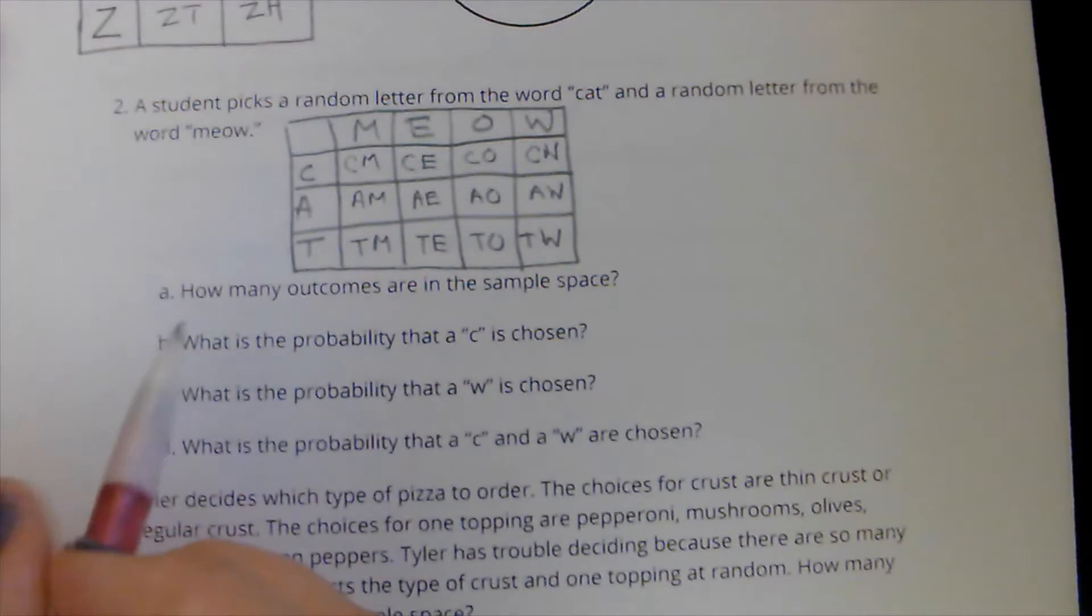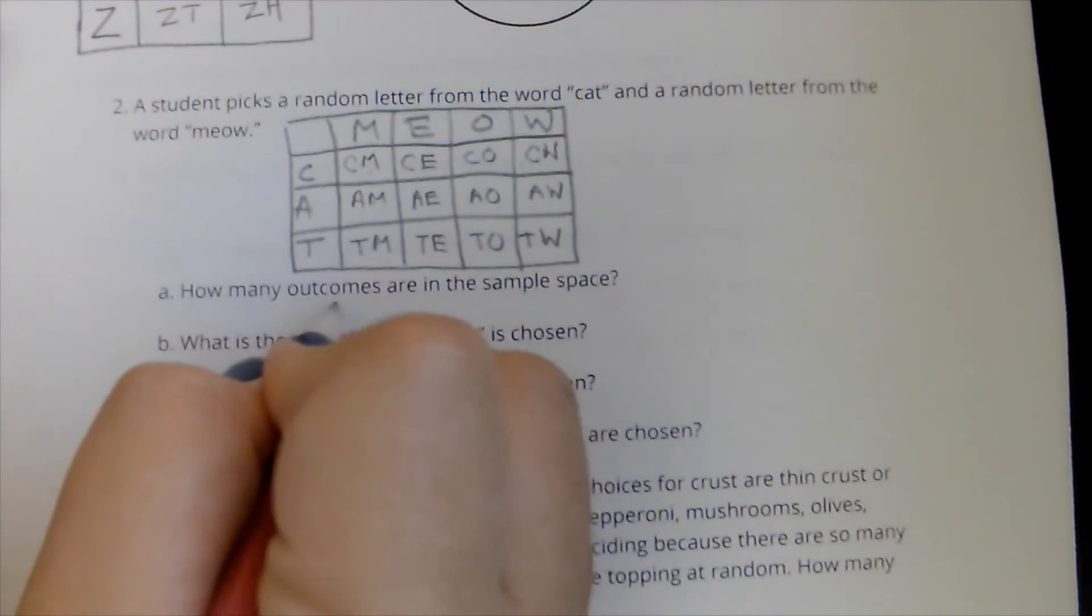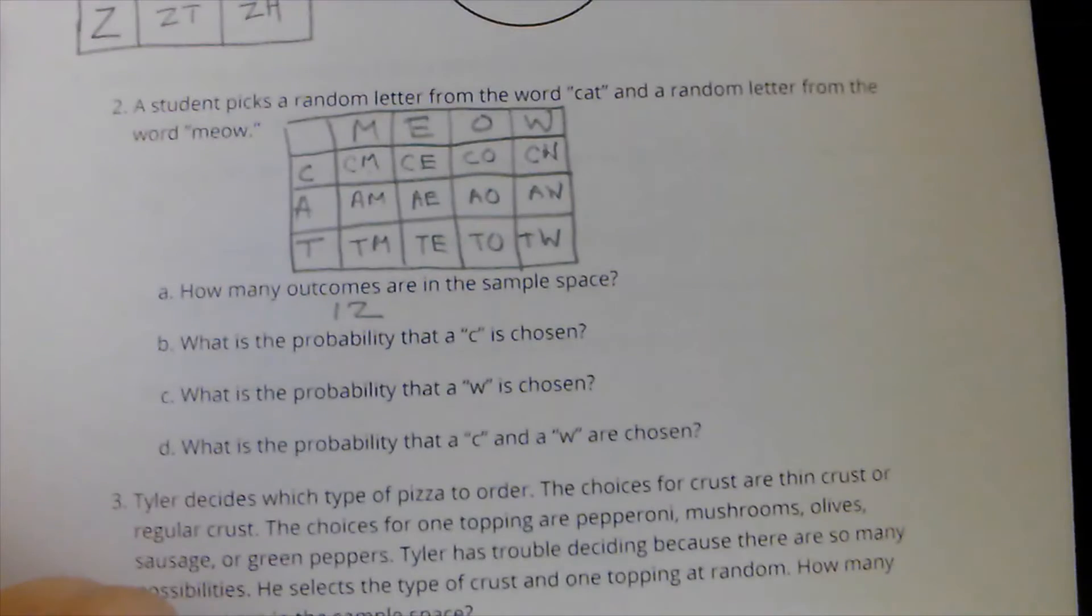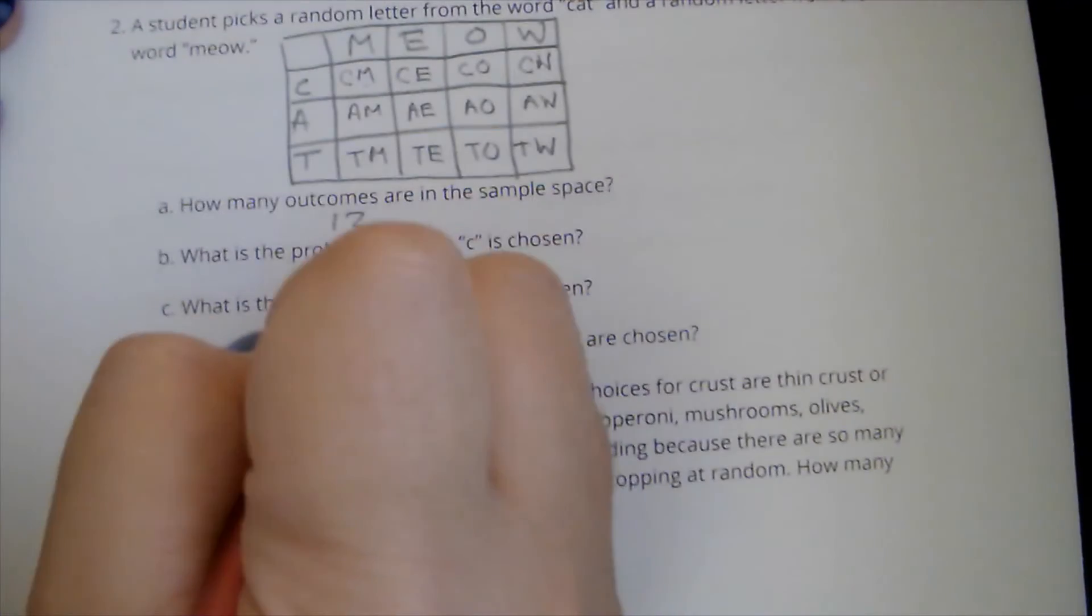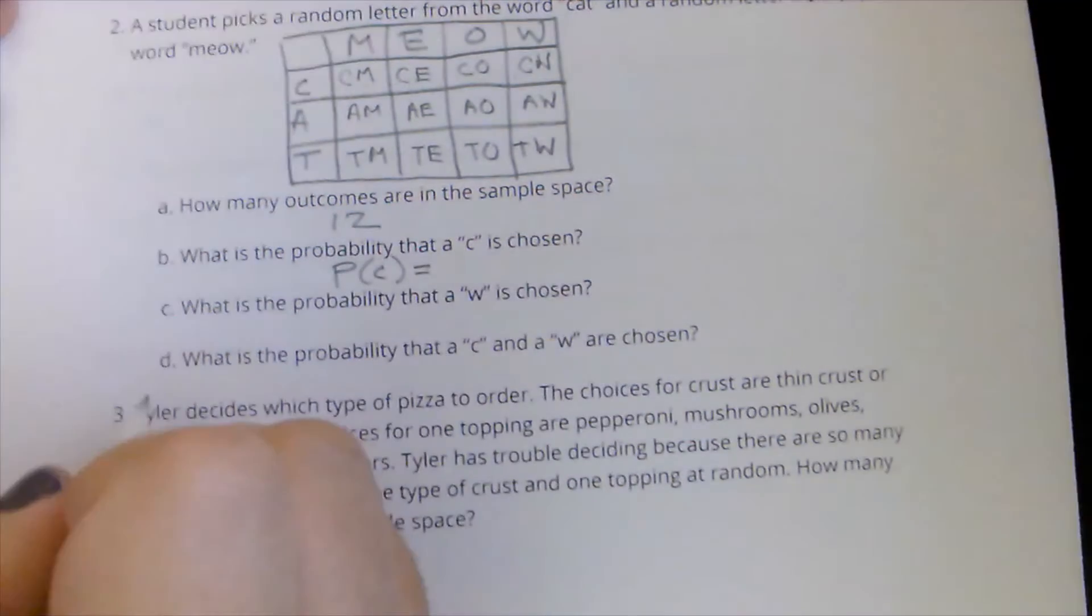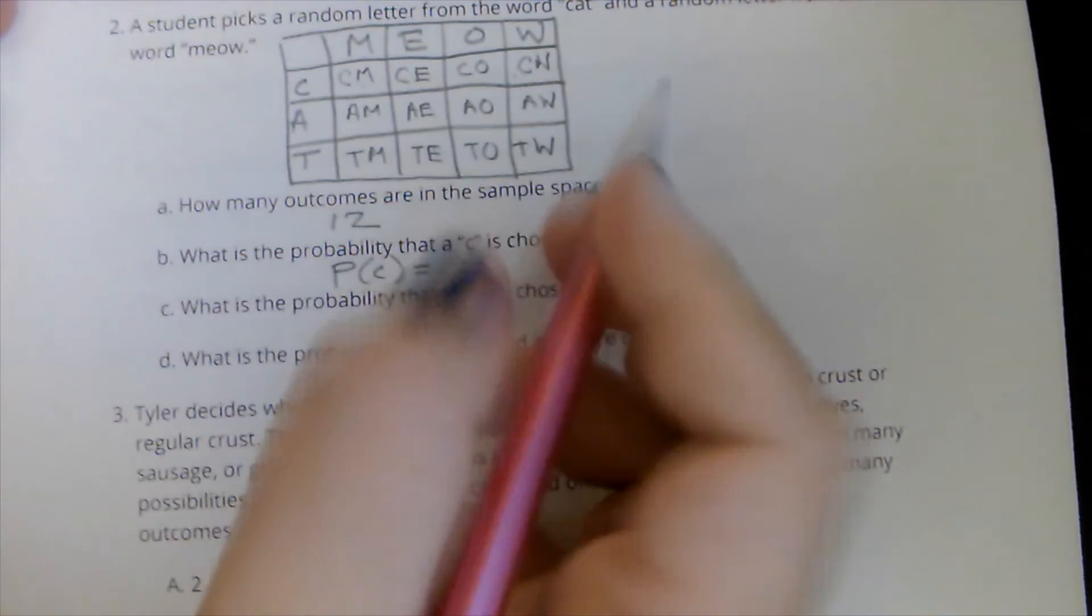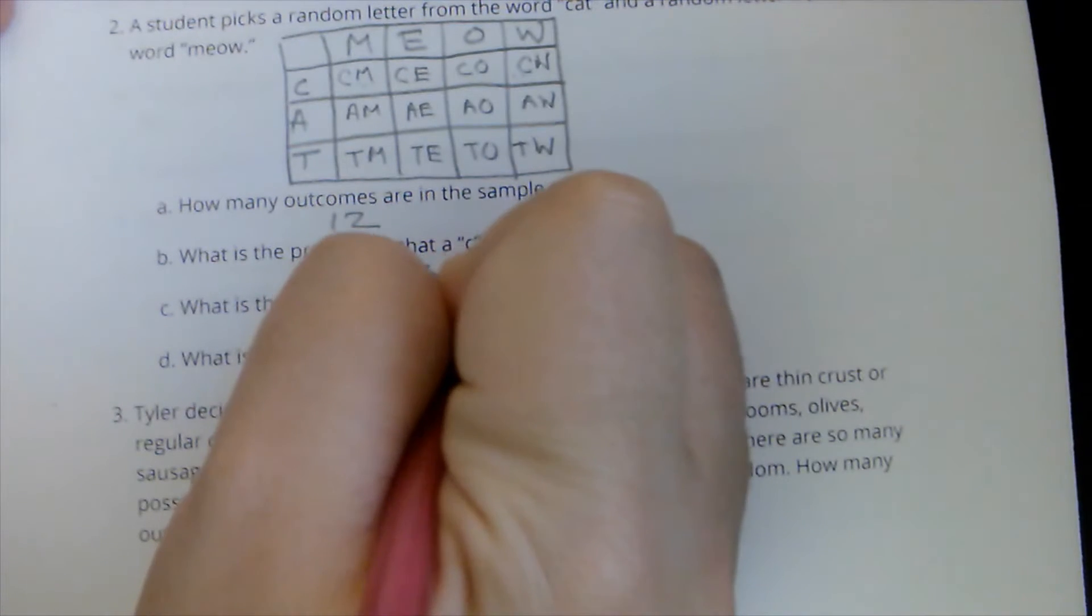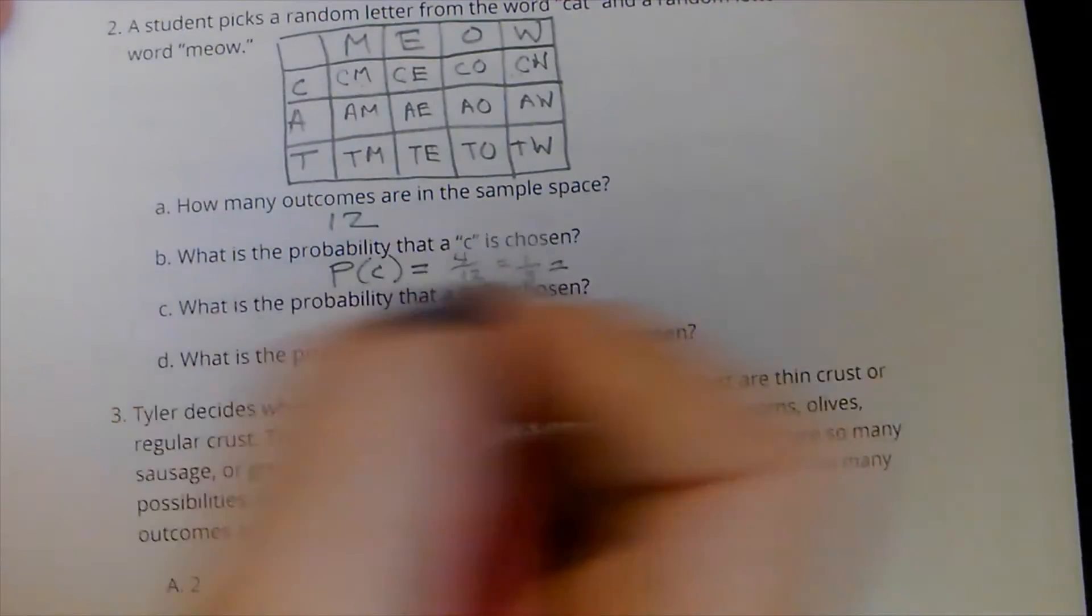So how many outcomes are in the sample space? Well, I've got 1, 2, 3, 4, 5, 6, 7, 8, 9, 10, 11, 12. What is the probability that a C is chosen? So my notation for that would be probability of getting a C. Out of these 12, I get a C 1, 2, 3, 4 times. So it's 4 out of 12, which is 1 out of 3, which is 0.33.